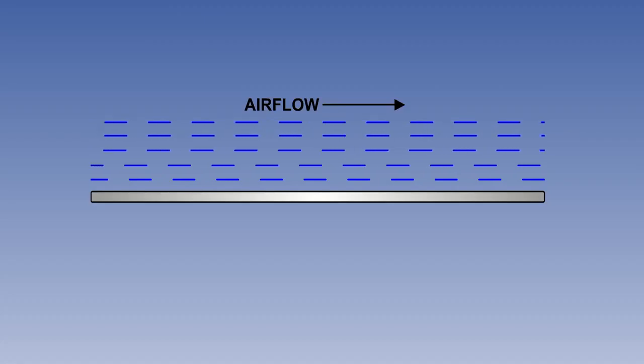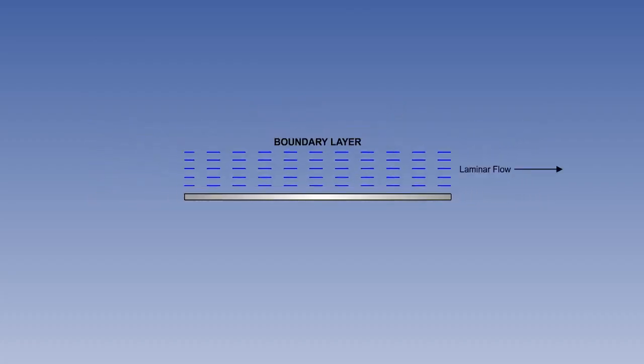As distance from the surface increases, less and less acceleration of the air takes place. Thus, there exists over the entire surface a layer of air whose relative velocity ranges from zero at the surface to a maximum at the boundary of the air that is affected by the passage of the aircraft.